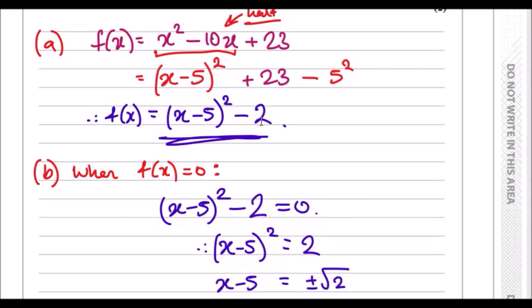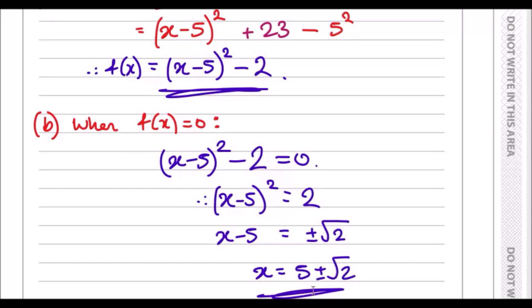So plus 2 across, like I did. Get rid of the square by square rooting, so you get plus minus root 2, and finally plus 5 across. Done. You should get 5 plus minus root 2.